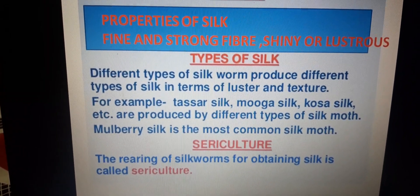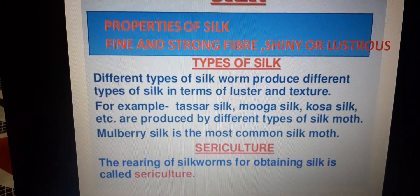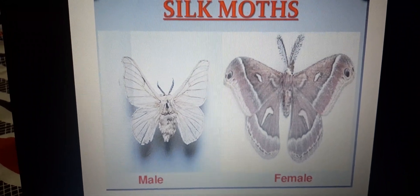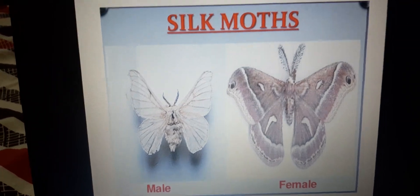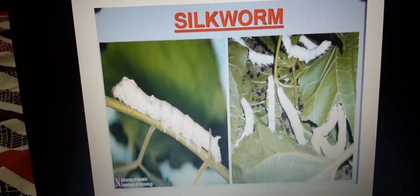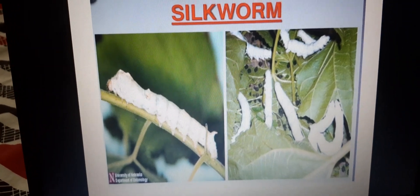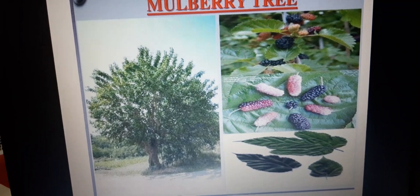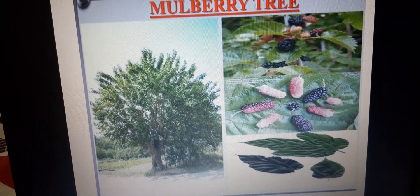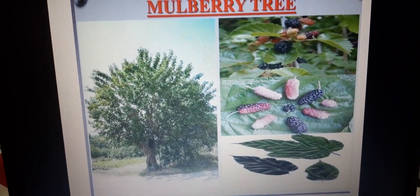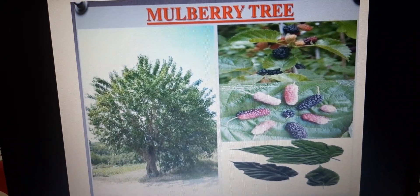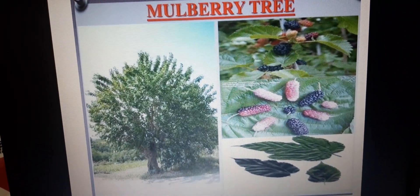The rearing of silkworms for obtaining silk is known as sericulture. The male silk moth is shorter than the female silk moth. From the silk moth, the silkworm comes, which is also known as larva or caterpillar. The mulberry silk moth is also known as Bombyx mori — B-O-M-B-Y-X M-O-R-I.